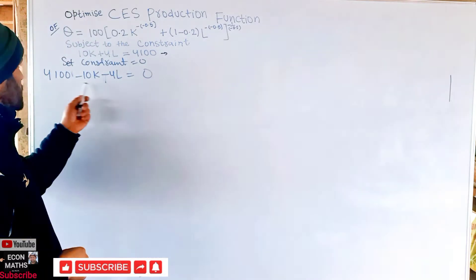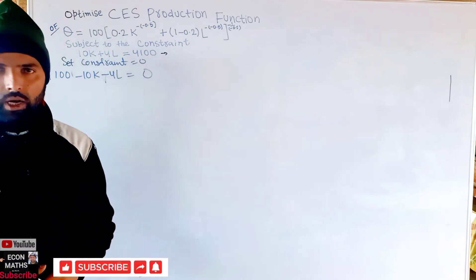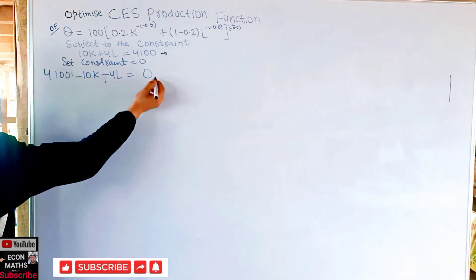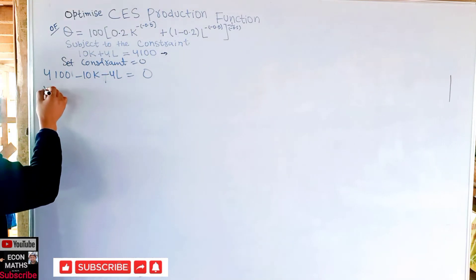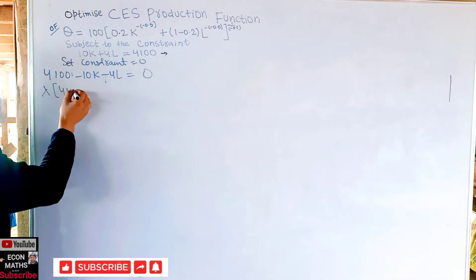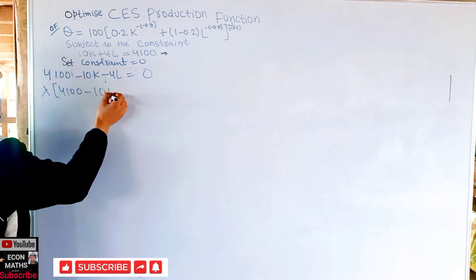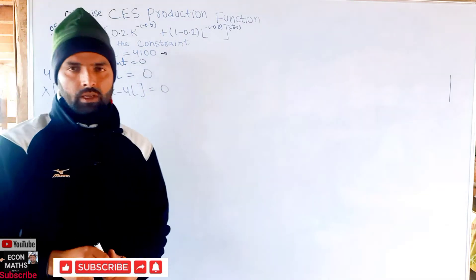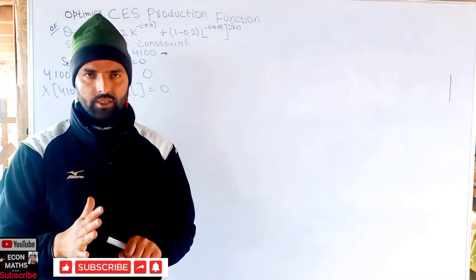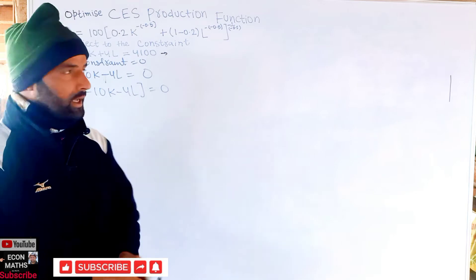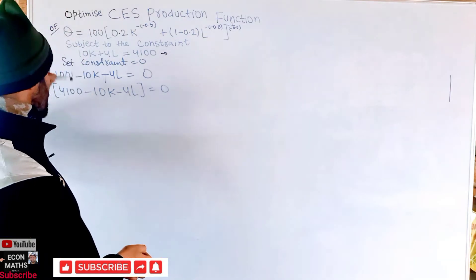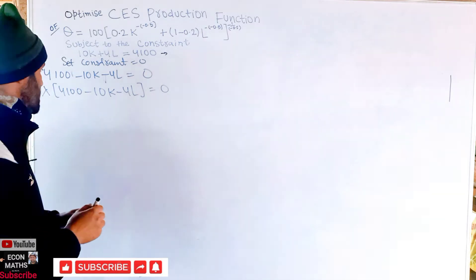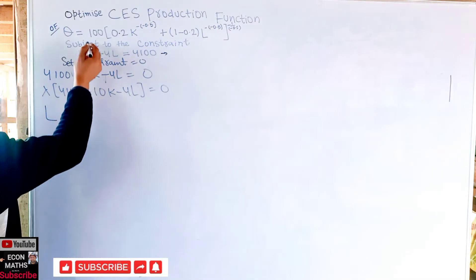The next step is to multiply the constraint by lambda (λ), so we get λ(4100 − 10K − 4L) = 0. The Lagrangian function is then formed by adding the objective function and this resulting lambda-multiplied constraint function together.